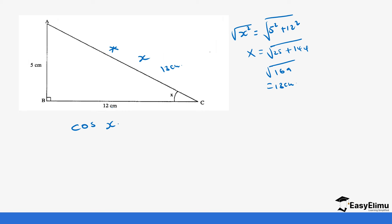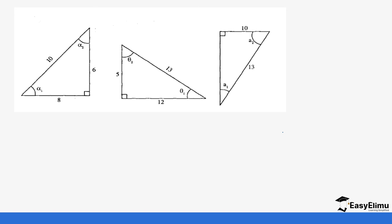So this side is 13 centimeters. If you want to get the cosine of x, cosine is adjacent over hypotenuse. The adjacent here is 12 over the hypotenuse which is 13. When you do 12 divided by 13 you get 0.9231. You can also get the cosine of different angles in the same way we did with sine.